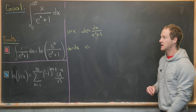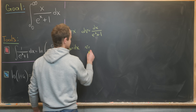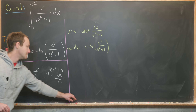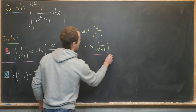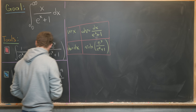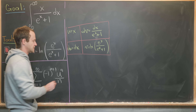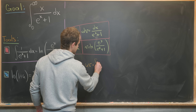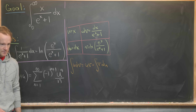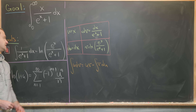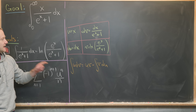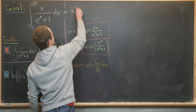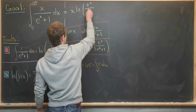Calculating v: that antiderivative is tricky but we worked it out as our first tool — it's the natural log of e to the x over e to the x plus one. Recalling the integration by parts formula, the integral of u dv equals u times v minus the integral of v du. So we have u times v: that's x times the natural log of e to the x over e to the x plus one.